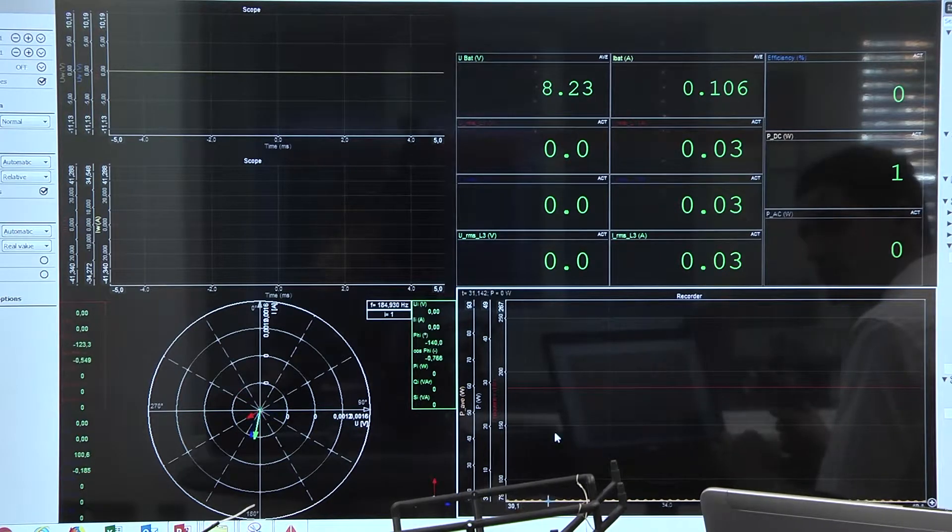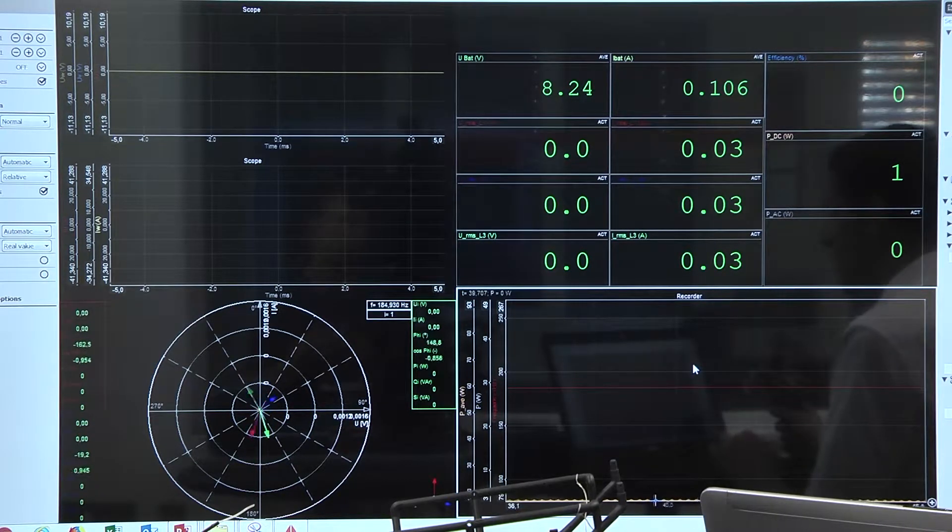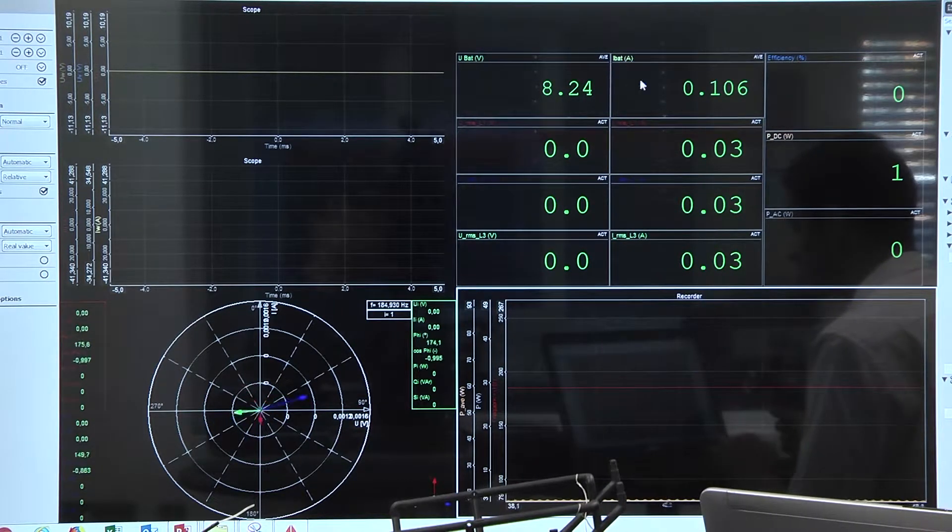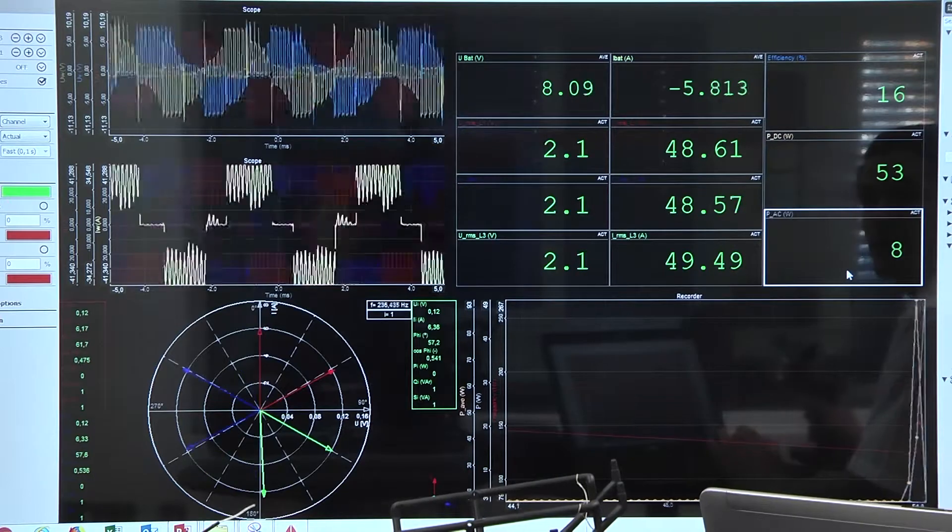In the recorder screen, we will see the frequency going up and down, as well as the DC power and the AC power. In the digital readings, we will see the current and voltages, as well as the efficiency, the DC power, and the AC power.